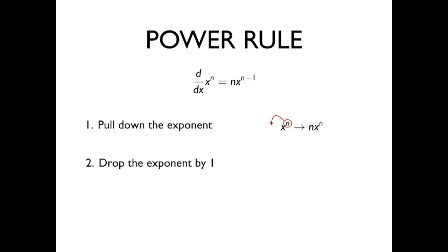The second step is to drop the exponent by 1. So if we now have n times x to the n, we look at the exponent again and we just subtract 1 from it, so that we have n times x to the n minus 1.